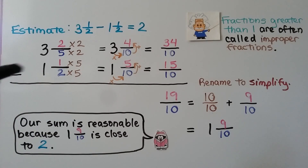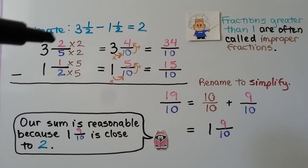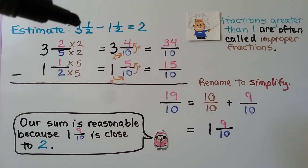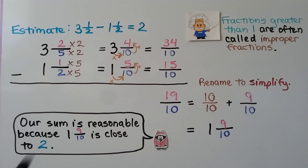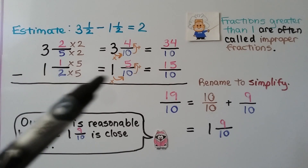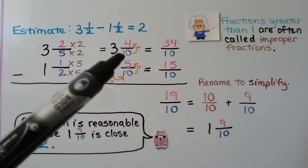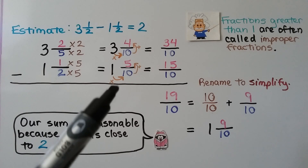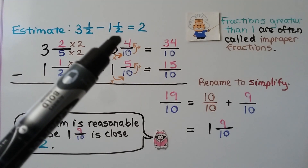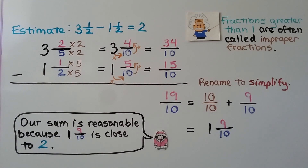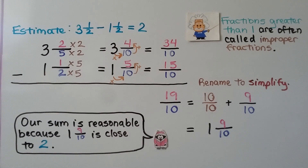Here we have 3 and 2 fifths minus 1 and 1 half. 2 is almost half of 5, so we can use 3 and a half as a benchmark minus 1 and a half for our estimate — 3 and a half minus 1 and a half is equal to 2. They have different denominators, so we give them the same denominator; they can meet at the multiple 10. 2 times 5 is 10, so 1 times 5 is 5. 5 times 2 is 10, so 2 times 2 is 4. We have 3 and 4 tenths minus 1 and 5 tenths. The numerator for the minuend isn't great enough to subtract the numerator from the subtrahend, so we can turn both mixed numbers into improper fractions.